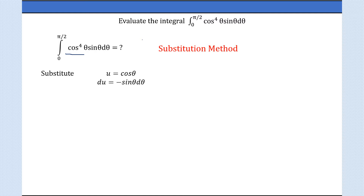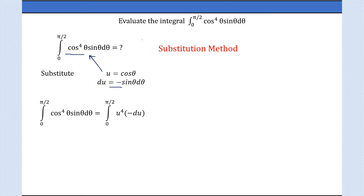If u = cosθ, its derivative is du = −sinθ dθ. Once you have u and du, the next step is to substitute these values back into the integral. So we have the integral from 0 to π/2 of cos⁴θ · sinθ dθ rewritten as the integral from 0 to π/2 with cos⁴θ replaced by u⁴.